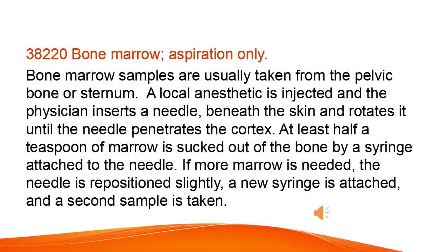Bone marrow aspiration only. Bone marrow samples are usually taken from the pelvic bone or sternum. A local anesthetic is injected and the physician inserts a needle beneath the skin and rotates it until the needle penetrates the cortex. At least half a teaspoon of marrow is sucked out of the bone by a syringe attached to the needle. If more marrow is needed, the needle is repositioned slightly, a new syringe is attached, and a second sample is taken.